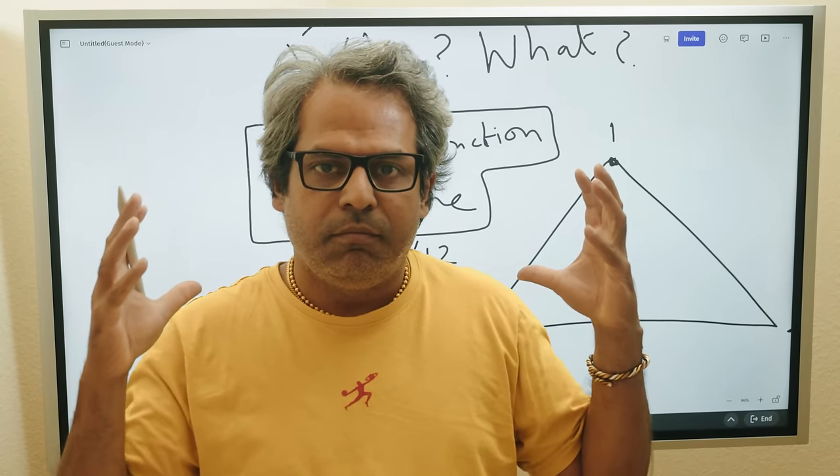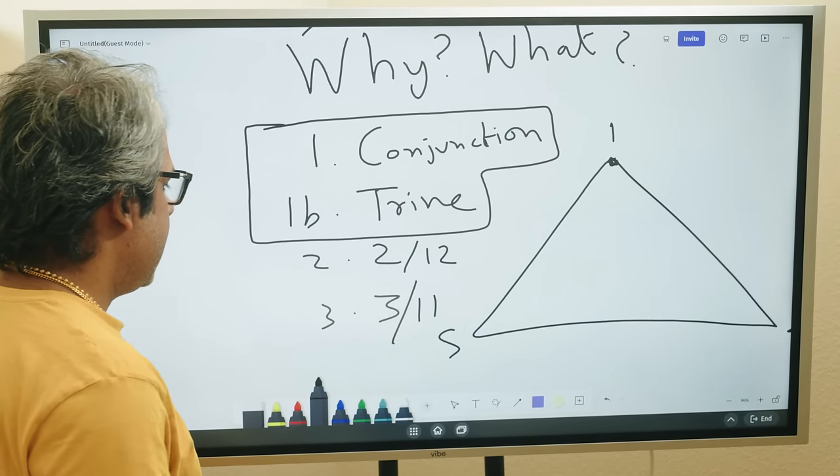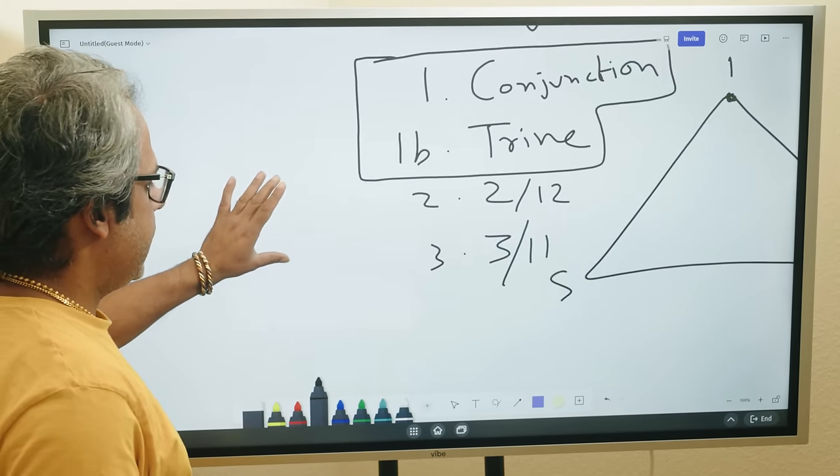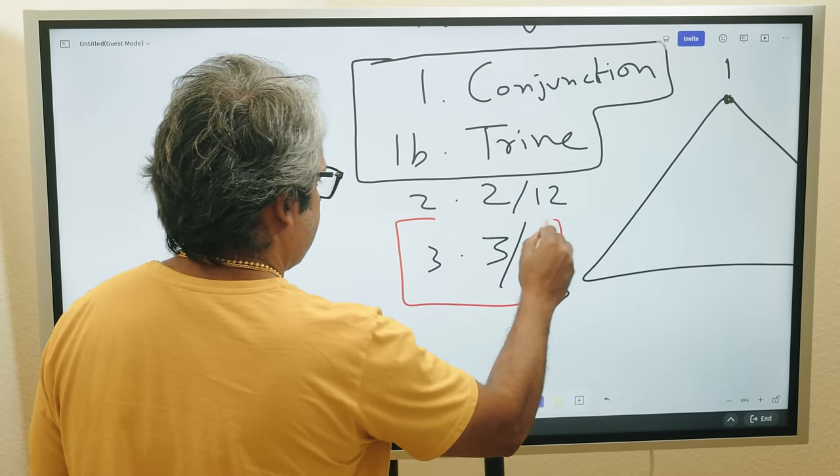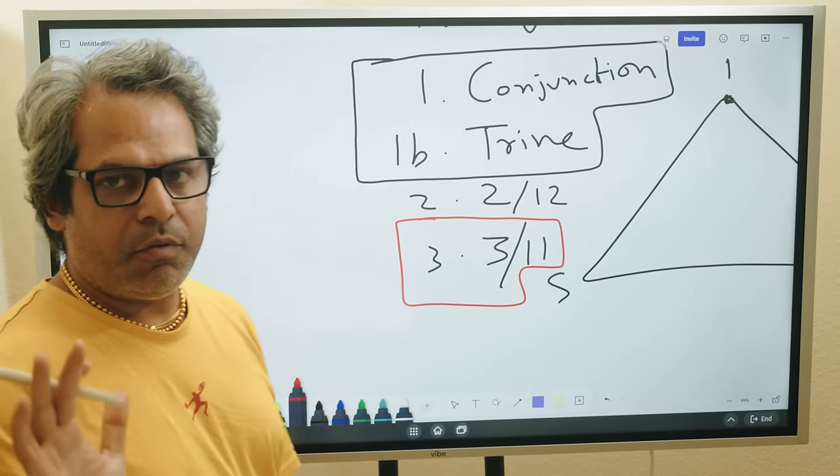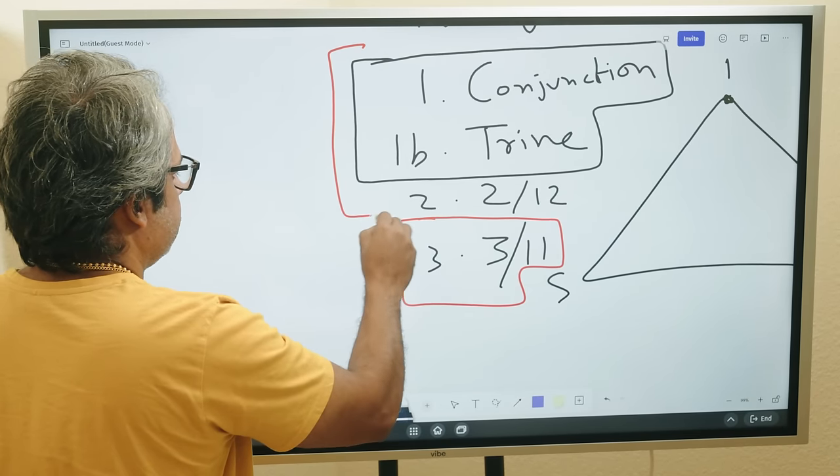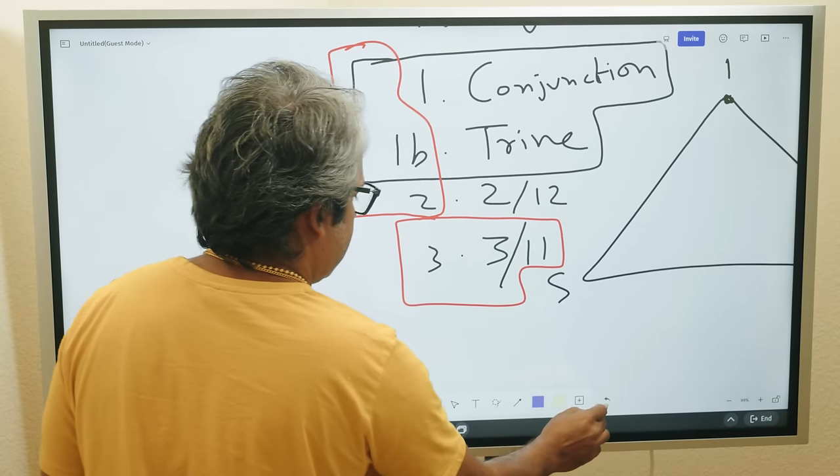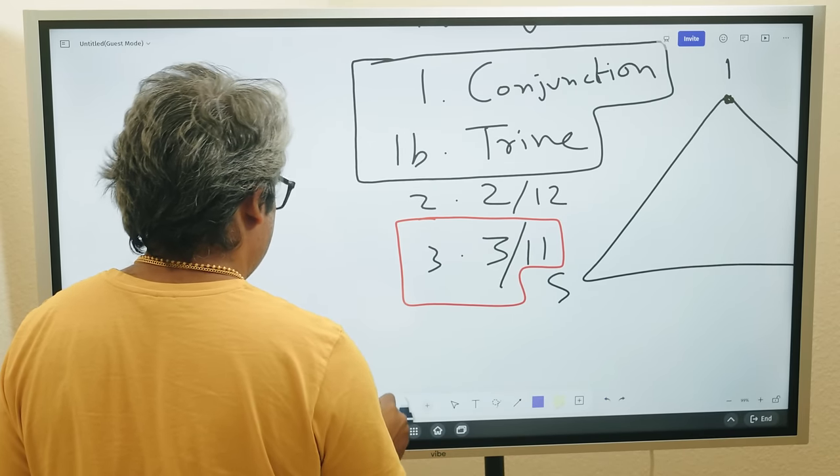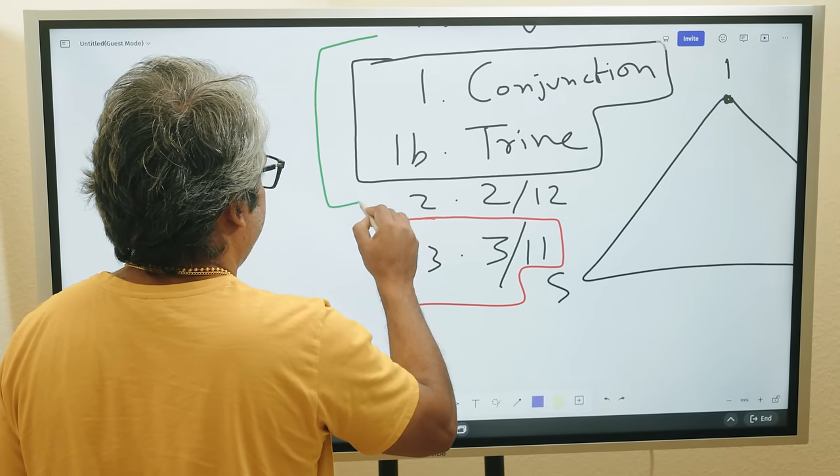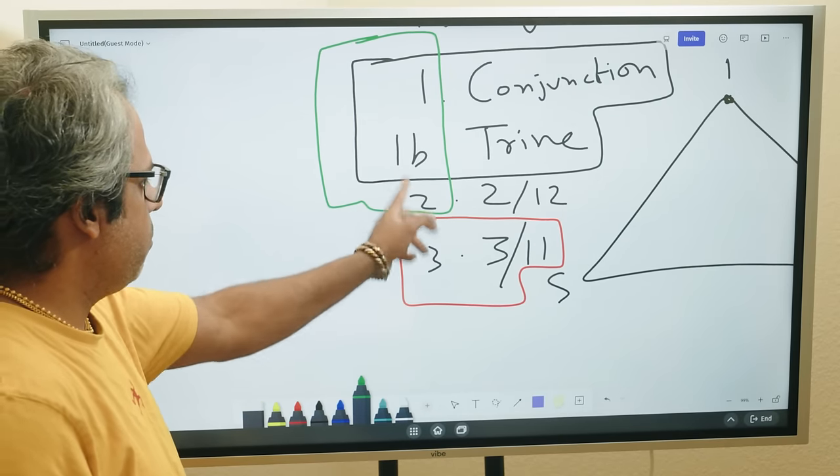This is 2-12. This comes later after you have seen the trine. This one becomes the last thing you'll ever use if you cannot find anything here.